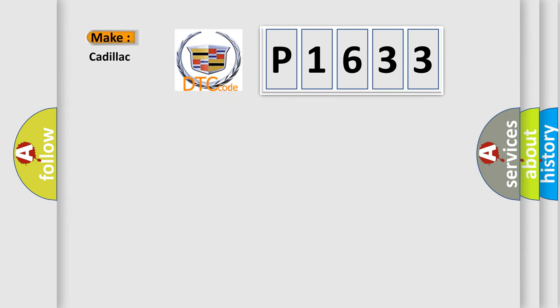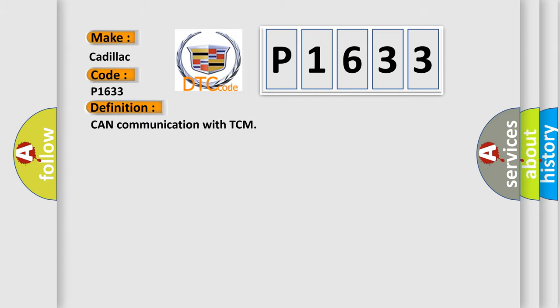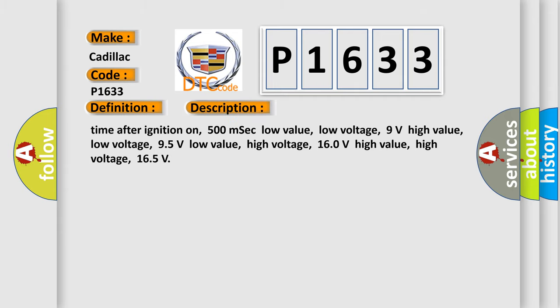What does the diagnostic trouble code P1633 interpret specifically for Cadillac? The basic definition is: CAN communication with TCM. Here is a short description of this DTC code — time after ignition on: 500 ms; low value, low voltage: 9 volts; high value, low voltage: 95 volts; low value, high voltage: 160 volts; high value, high voltage: 165 volts.